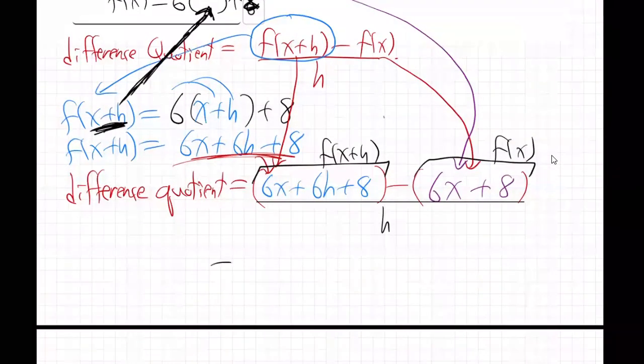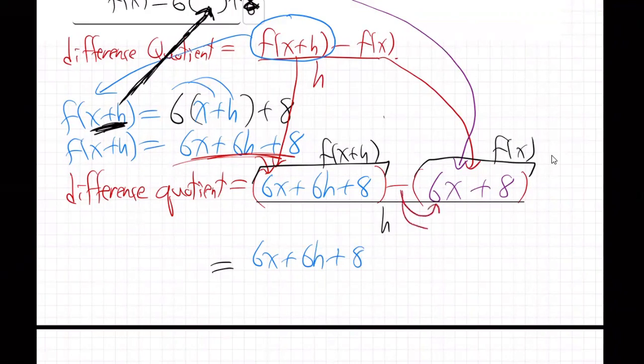And now we just have to work that thing out. You know what the deal is? Drop the parentheses. And if there is anything in the front, it'll distribute. There's nothing in front of the first parentheses. Second parentheses, the minus sign is going to go there and there. So the minus will become minus 6x minus 8. All over h. Like that.